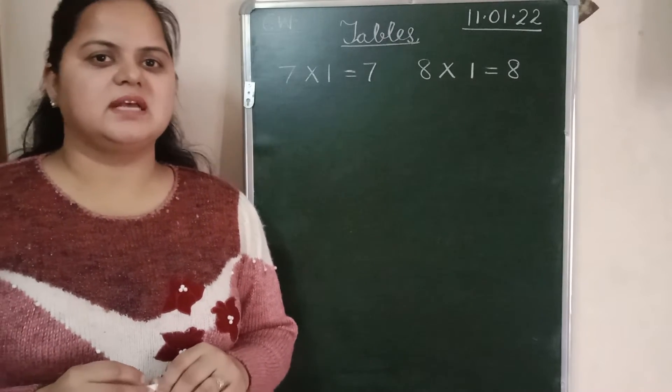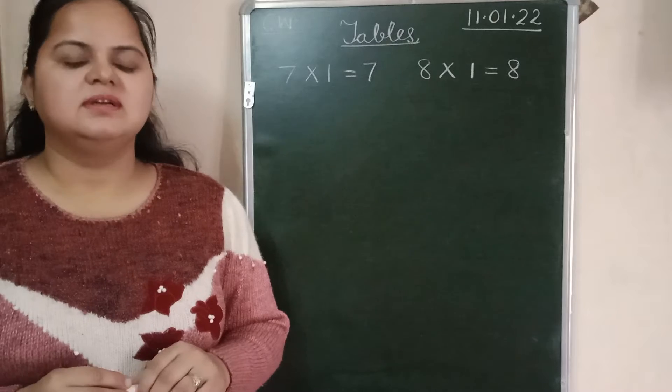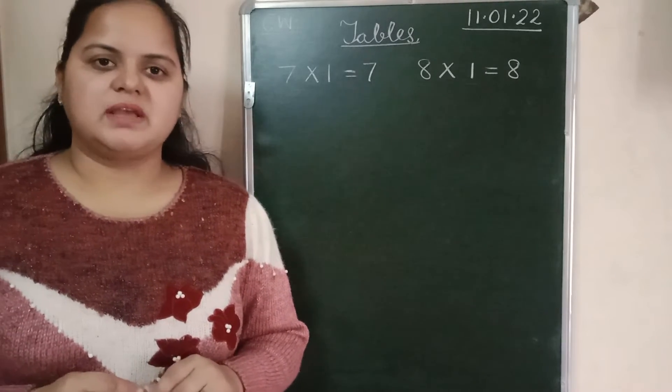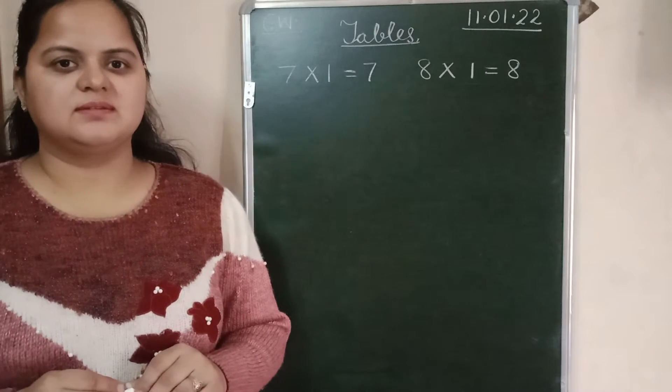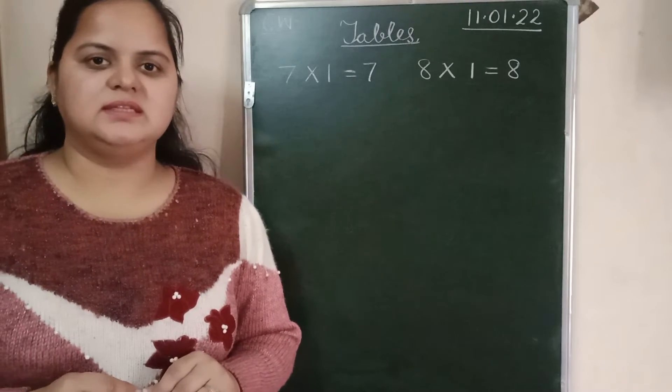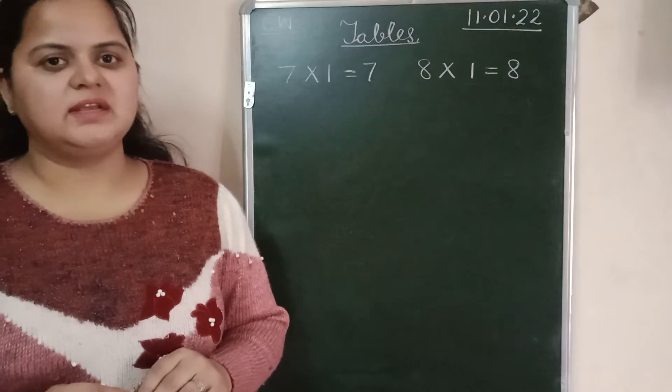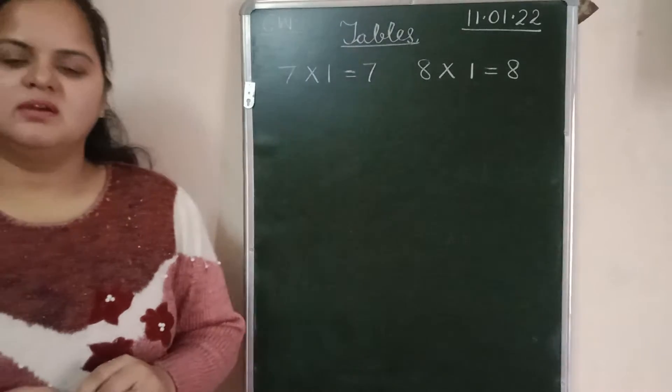7-6s are 42. 7-7s are 49. 7-8s are 56. 7-9s are 63. 7-10s are 70. Very good.